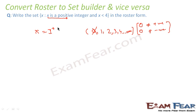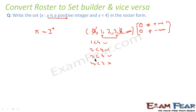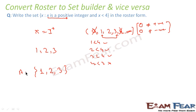Now on that we have one more condition: x is less than 4. So when x is less than 4, we check: 1 is less than 4 — yes. 2 is less than 4 — yes. 3 is less than 4 — yes. 4 is less than 4 — no. So we stop here. The elements are 1, 2, and 3. When we write this in roster form, we write all elements comma-separated, enclosed within braces. So A = {1, 2, 3}.